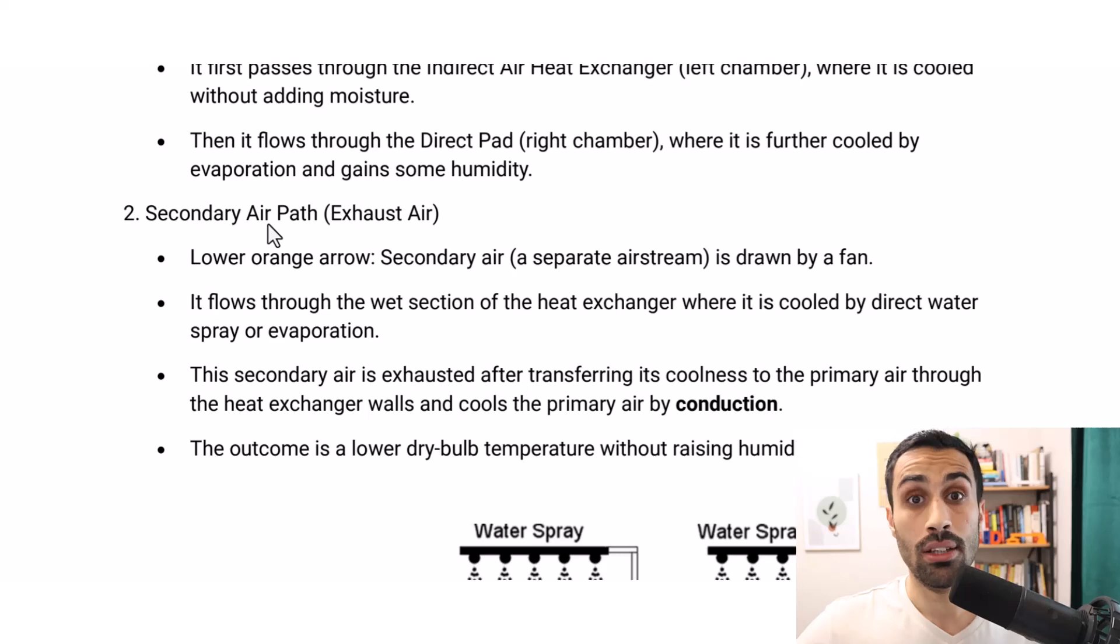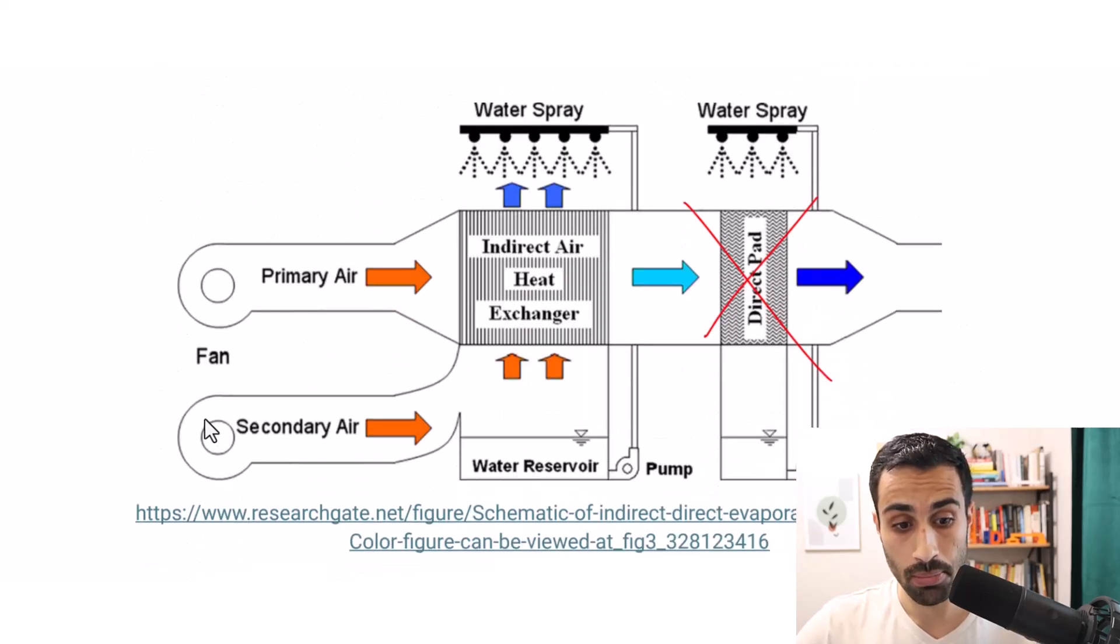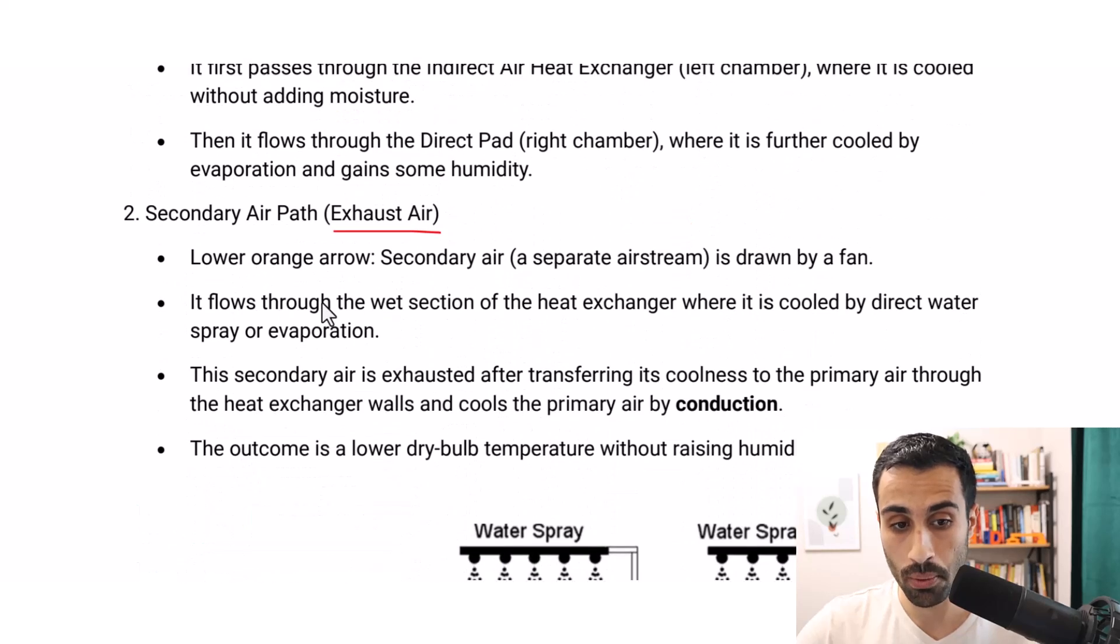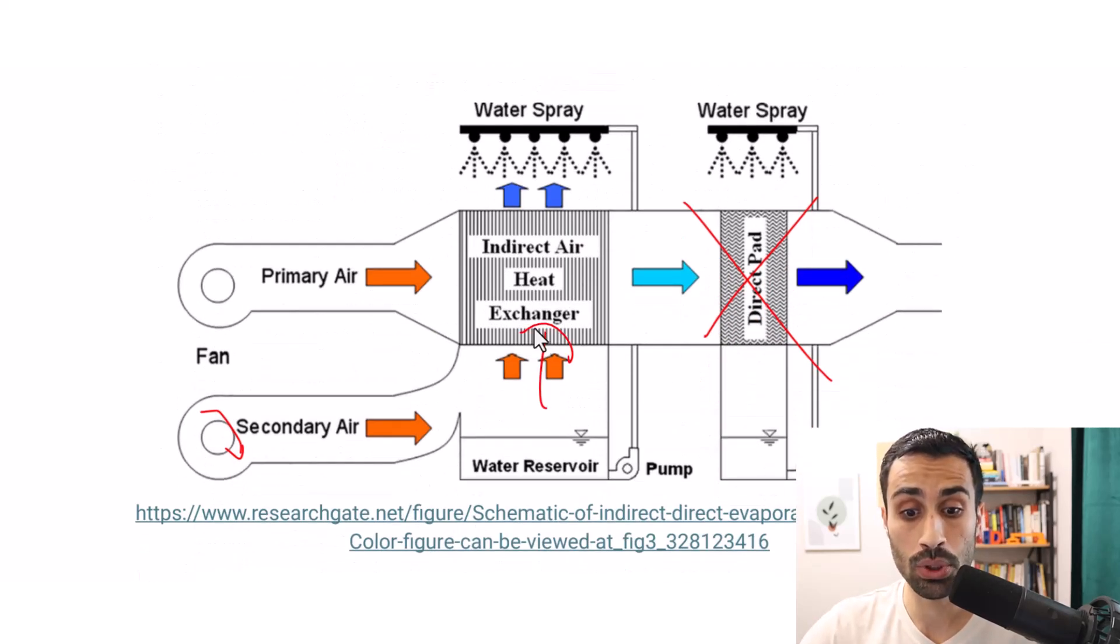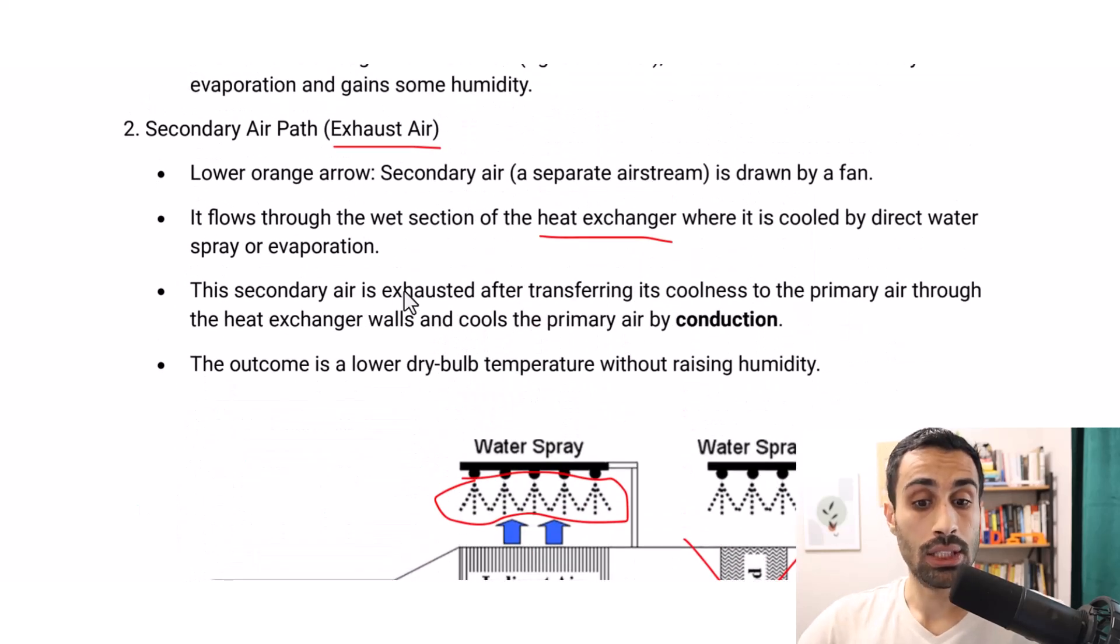Then we have secondary air, the exhaust air. We use a fan here for secondary air. We have a water reservoir. So it is a separate airstream drawn by a fan. It flows through the wet section of the heat exchanger, where it's cooled by direct water spray or evaporation. It goes here, and it is cooled through the water spray. The secondary air is exhausted after transferring its coolness to the primary air through heat exchanger walls and cools the primary air by conduction.